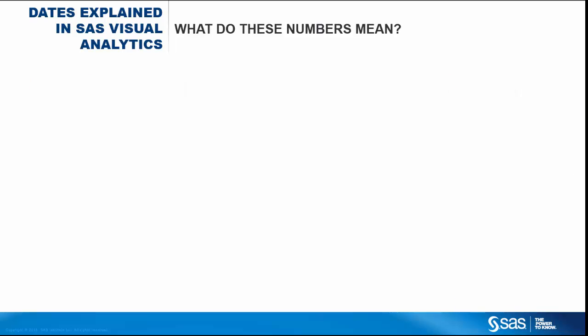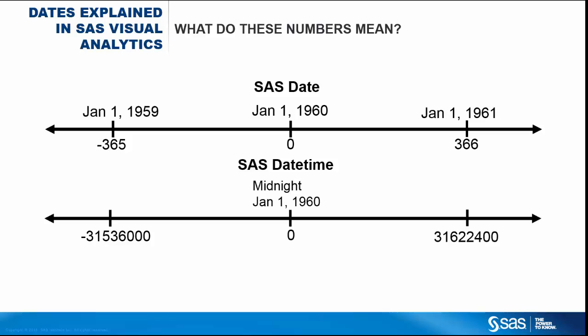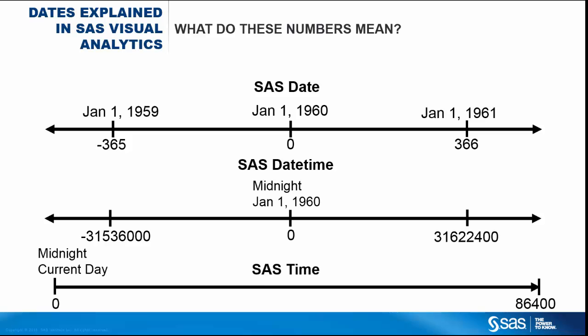So what do the numbers mean? A SAS date value is a numeric value representing the number of days between January 1, 1960 and a specified date. A SAS date-time value represents the number of seconds between January 1, 1960 and a specified date and time. A SAS time value represents the number of seconds since midnight of the current day. These values are between 0 and 86,400, because 86,400 is the number of seconds within a 24-hour period.